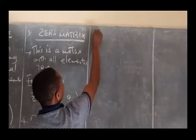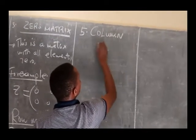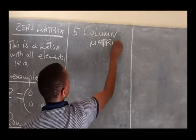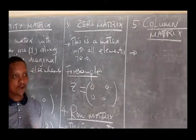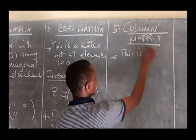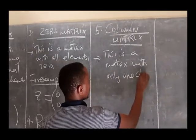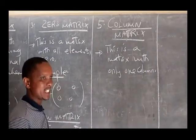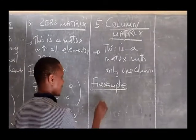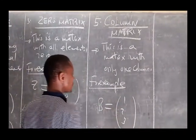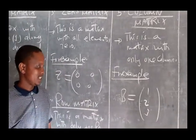The last type of matrix is called a column matrix. A column matrix is a matrix with only one column. For example, let us call it matrix B — this one. This matrix is a type of matrix that we call a column matrix.